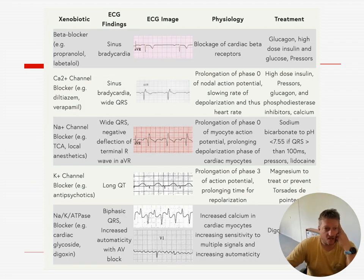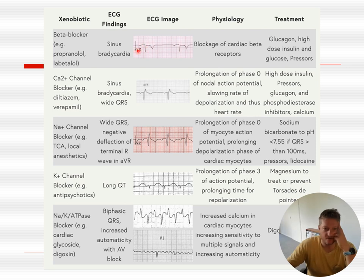Talking about the ECG — certain medications which block different channels will cause different effects. Beta blockers cause blocking of the AV node, so you'll often see prolongation of the PR interval and then bradycardia. If you're looking for toxicity, the first thing that will happen is that PR interval starts getting bigger.